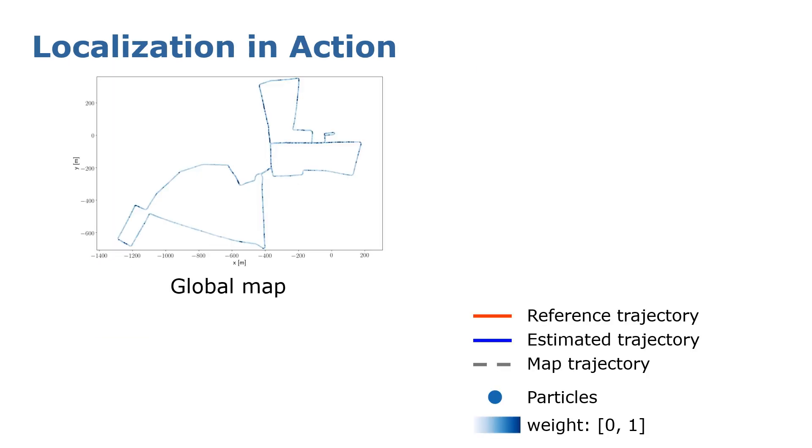Here, we show a demo of using our method to localize our vehicle in an urban environment. The particles were first generated uniformly around the whole map. After several iterations, you can see that the particles converged successfully to the correct location in a very short time.